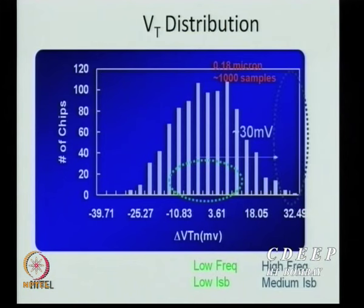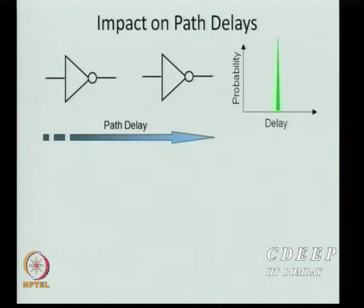Earlier, designers were mostly computer scientists who looked down on electrical and technology people. Now, with variability, they must collaborate with device engineers. Co-design with computer scientists, electrical engineers, and chemists is now standard. That is why microelectronics is taught comprehensively — devices, technology, systems, and design — because from 2005 onwards everyone must know everything.